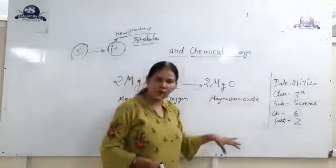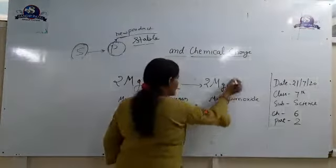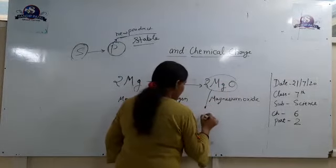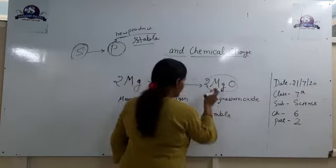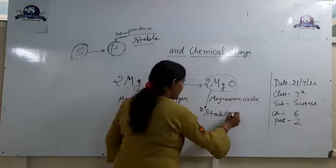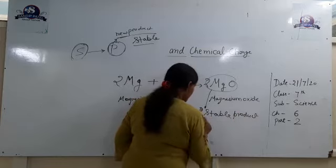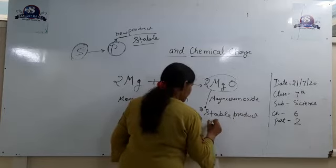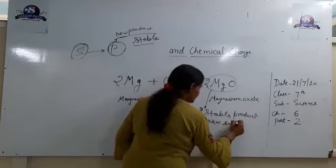The product formed — magnesium oxide — is in a stable form and is a new substance. This new product cannot be converted back, so it is a stable product and a new substance has been formed.